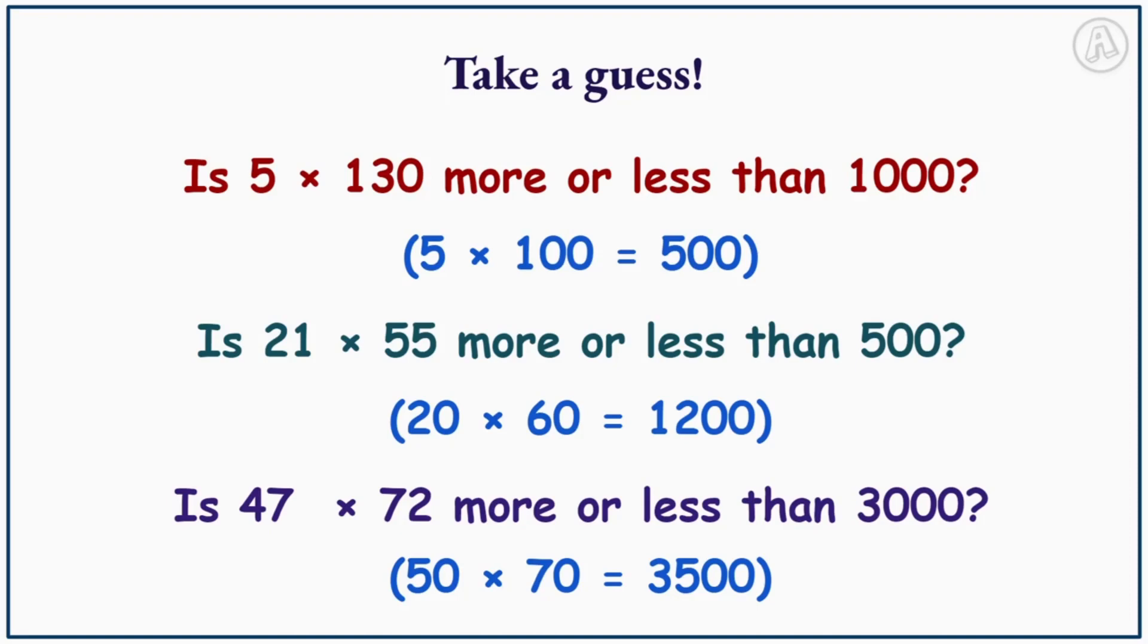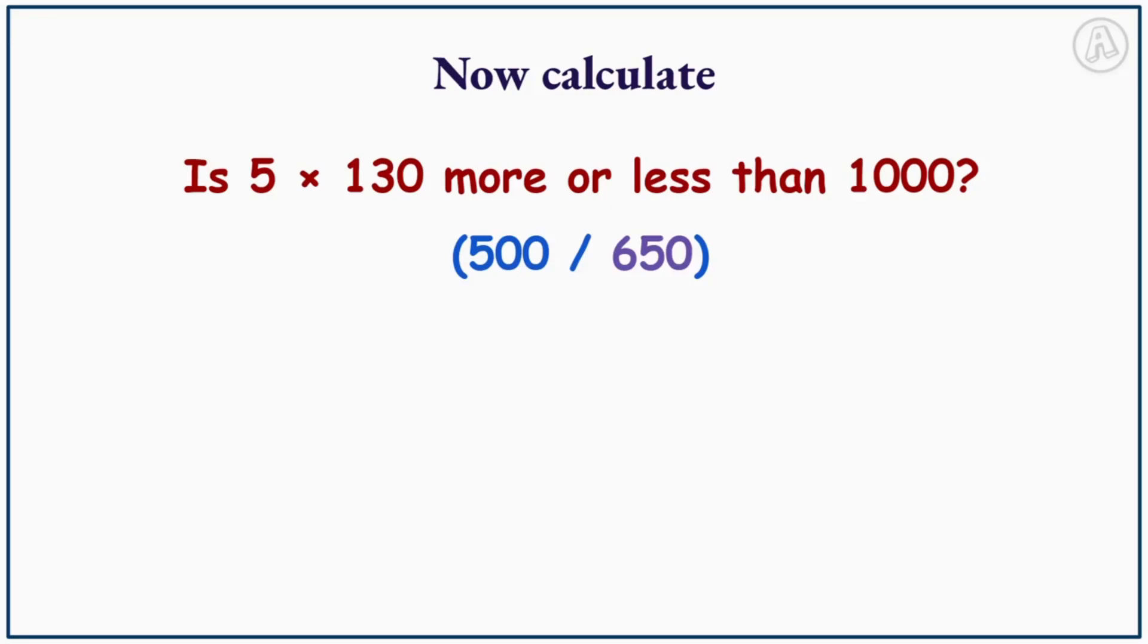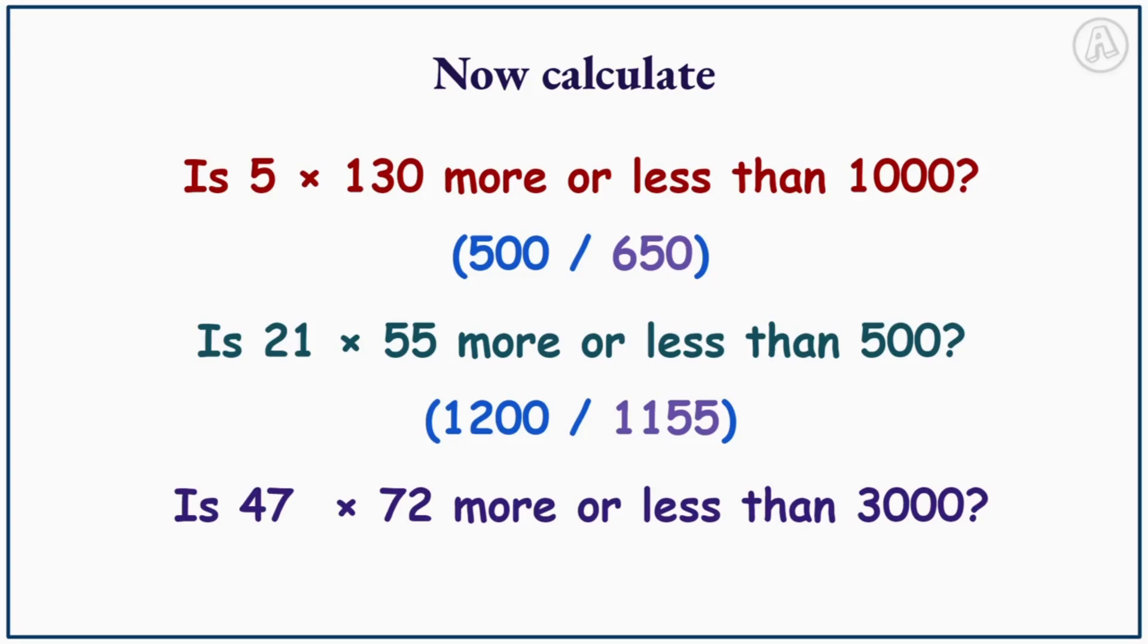Let's have a look at the answers. So if we calculate 5 times 130, our answer is 650. This means 5 times 130 is less than 1000. 21 times 55 equals 1155, which means it is more than 500. And 47 times 72 equals 3384, which means it's more than 3000.